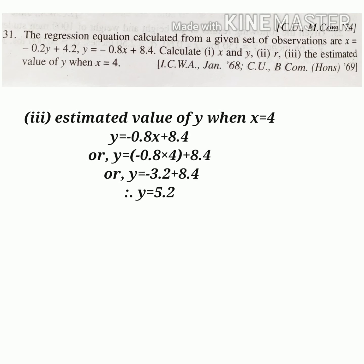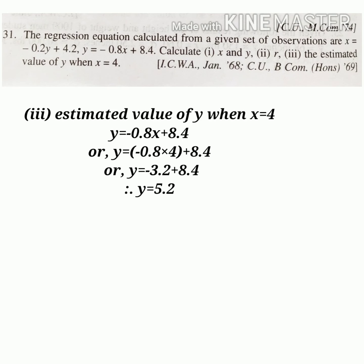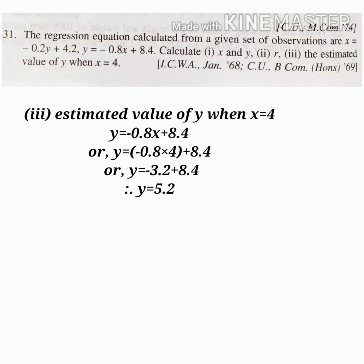For the third part of this problem, we estimate the value of y when x = 4. Using the regression equation of y on x: y = −0.8x + 8.4, we substitute x = 4: y = −0.8 × 4 + 8.4 = −3.2 + 8.4. Finally, we get y = 5.2 when x = 4.